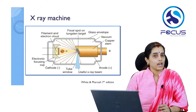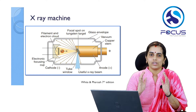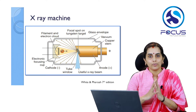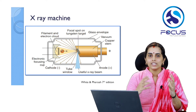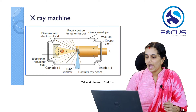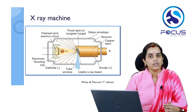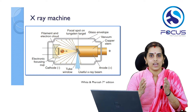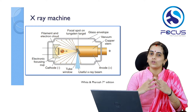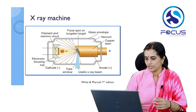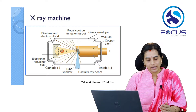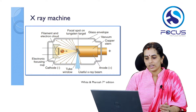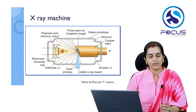Within the glass envelope, a vacuum is maintained to prevent collision of the fast-moving electrons with air and to prevent burnout damage of the tungsten filament. Surrounding the glass envelope is insulating oil, which also acts as a layer of heat dissipation. The useful X-ray beam exits the X-ray tube via the tube window.